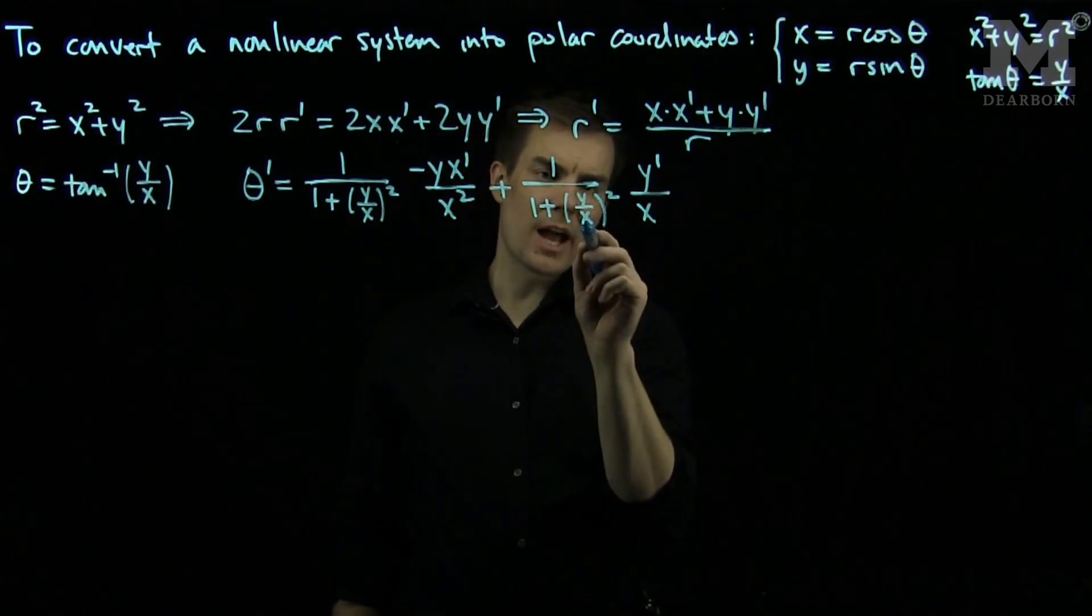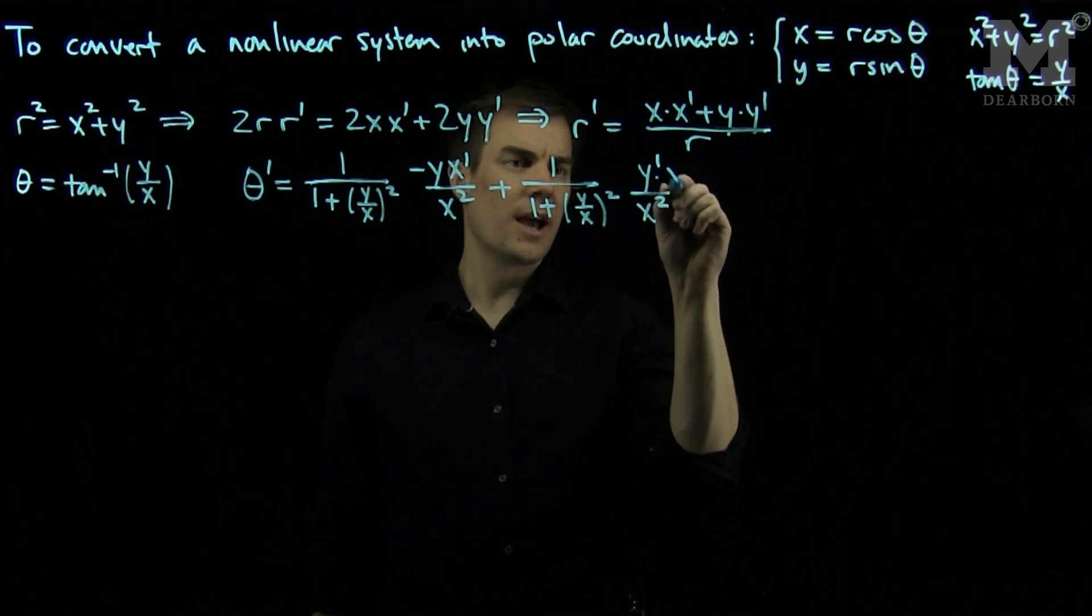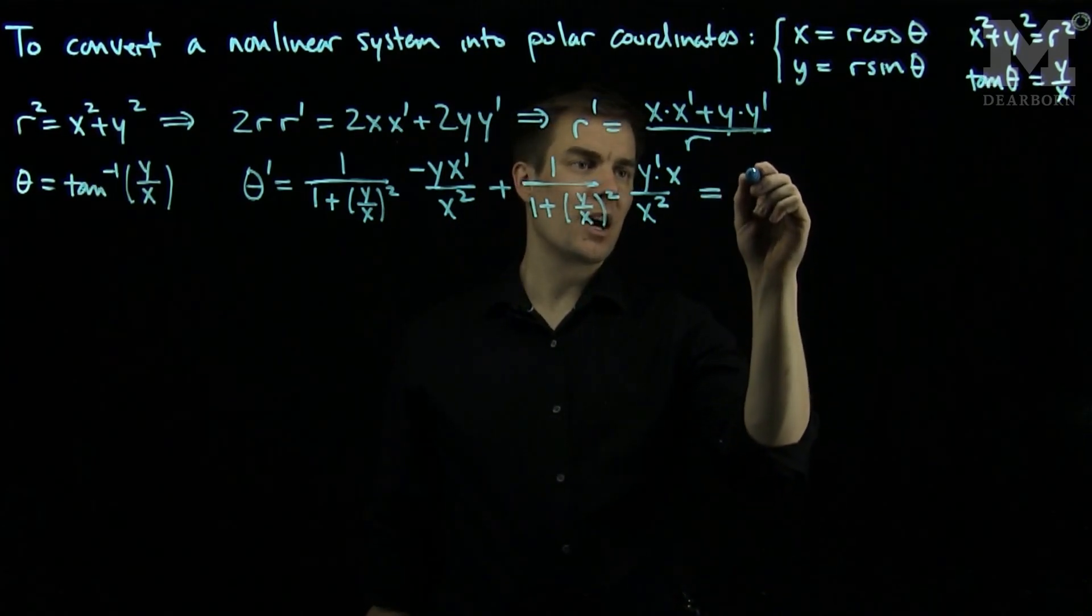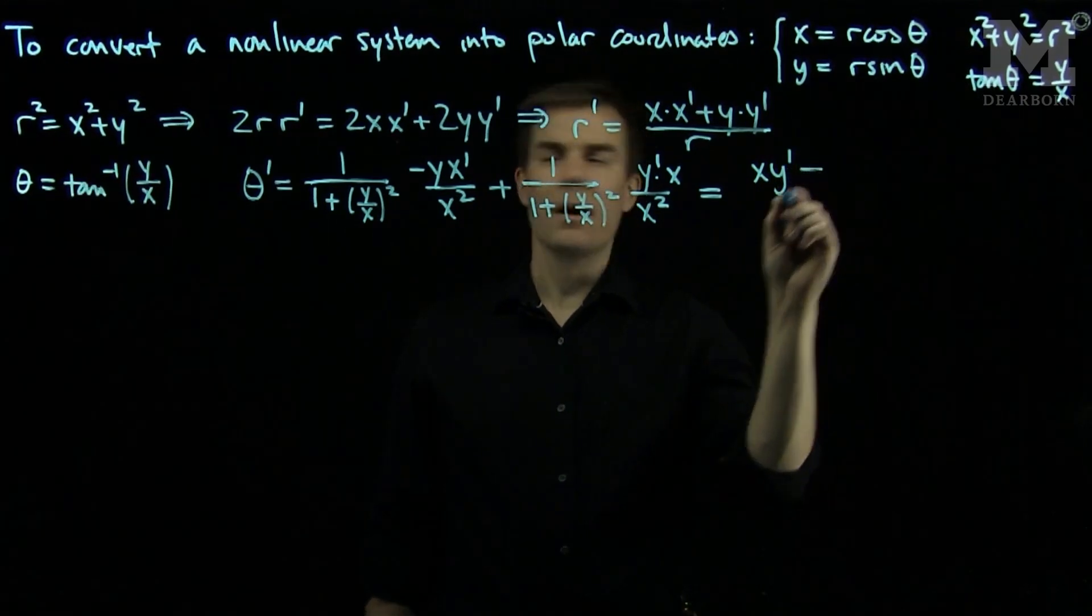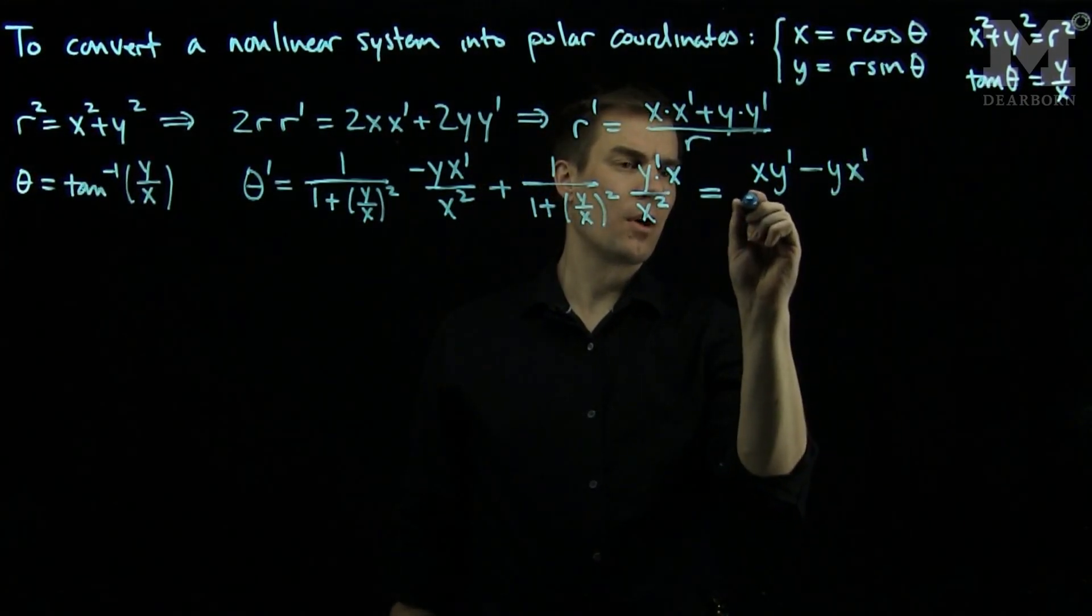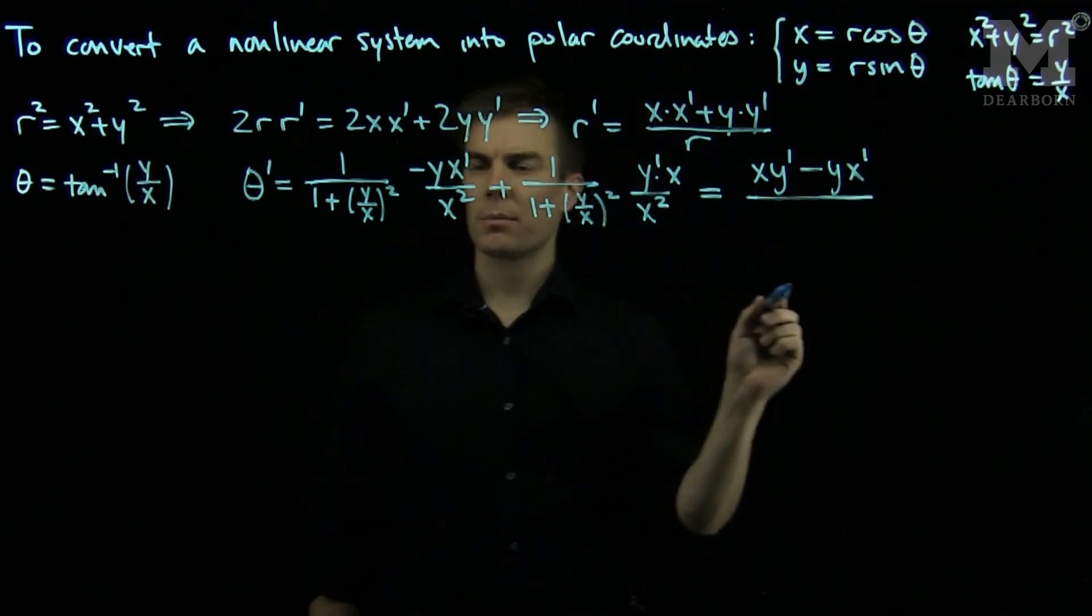Since there's an x squared in this denominator, I will artificially add an x on the bottom and an x on the top. Gathering like terms, our expression becomes x times y prime minus y x prime, all divided by x squared plus y squared.